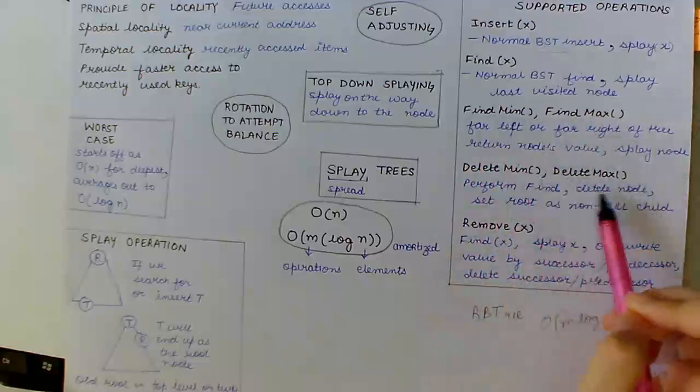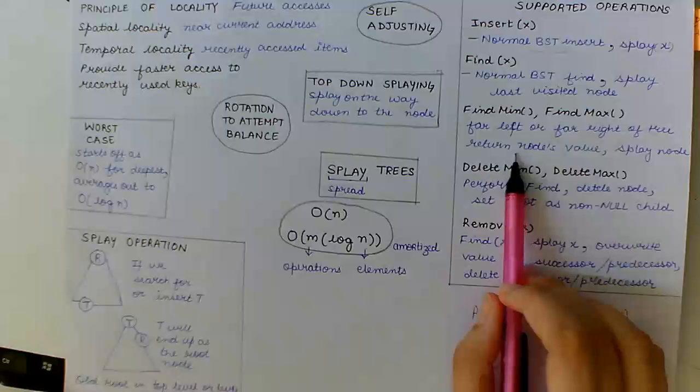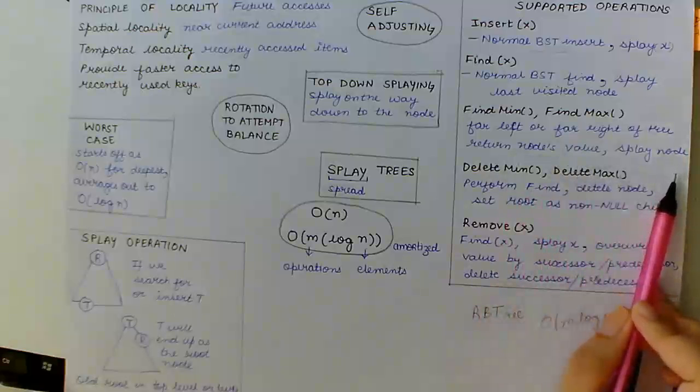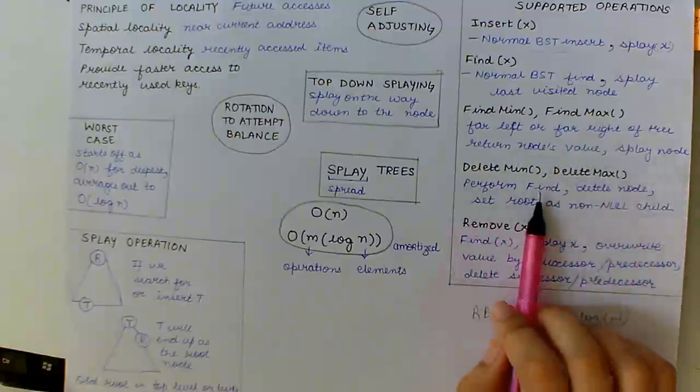Now, moving on to the next operation: find min and find max. We walk to far left or right of tree and return the node's value and then splay that node.